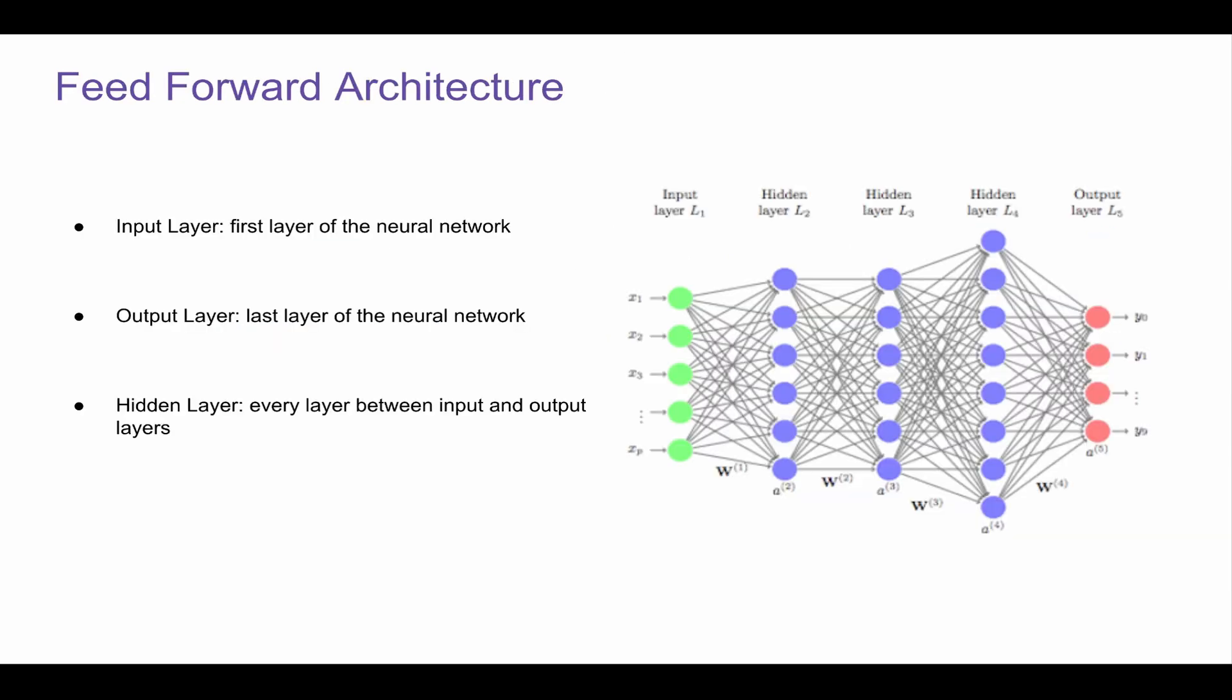So this is the Feed Forward architecture. It's the most simple deep neural network you're going to see. It has input layer, it has output layer, and it has one or multiple hidden layers. The first layer is input, last layer is output, and everything in between is hidden layers.